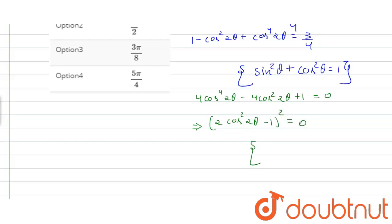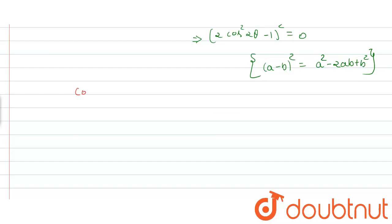Because a minus b whole square equals a square minus 2ab plus b square. Now further solving this, we get cos square 2 theta equals 1 by 2, or equal to cos square pi by 4.